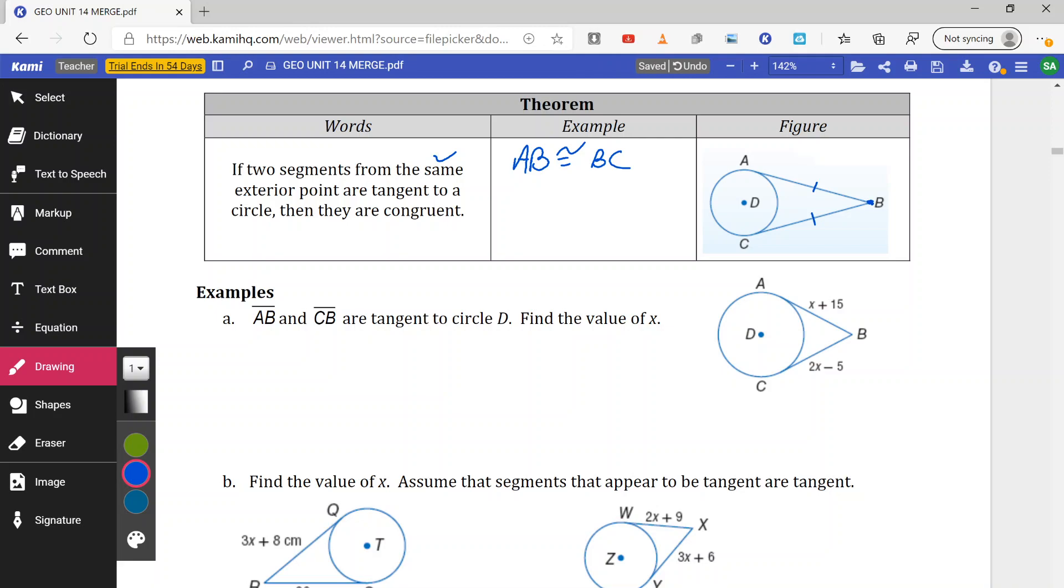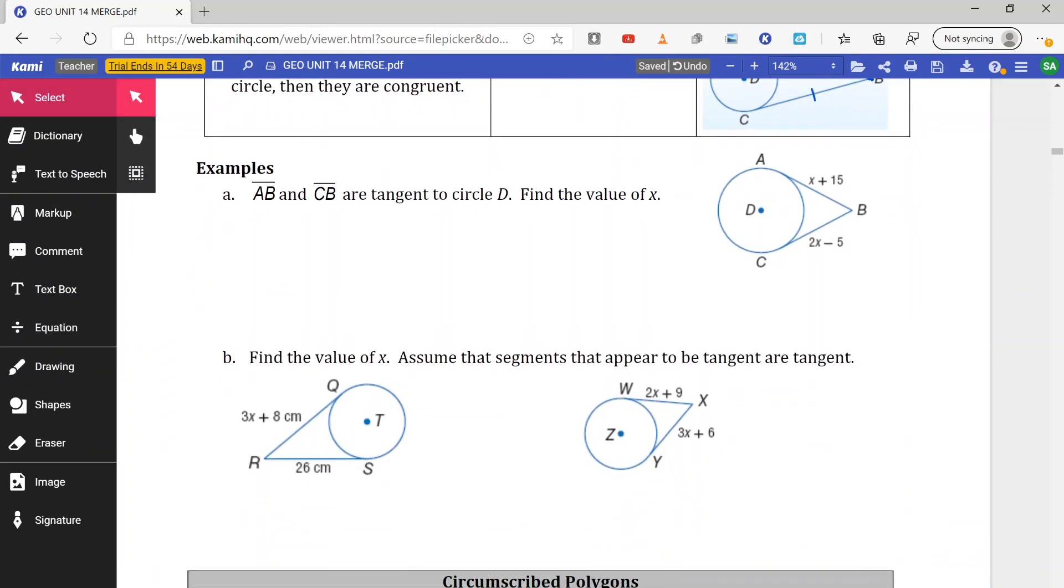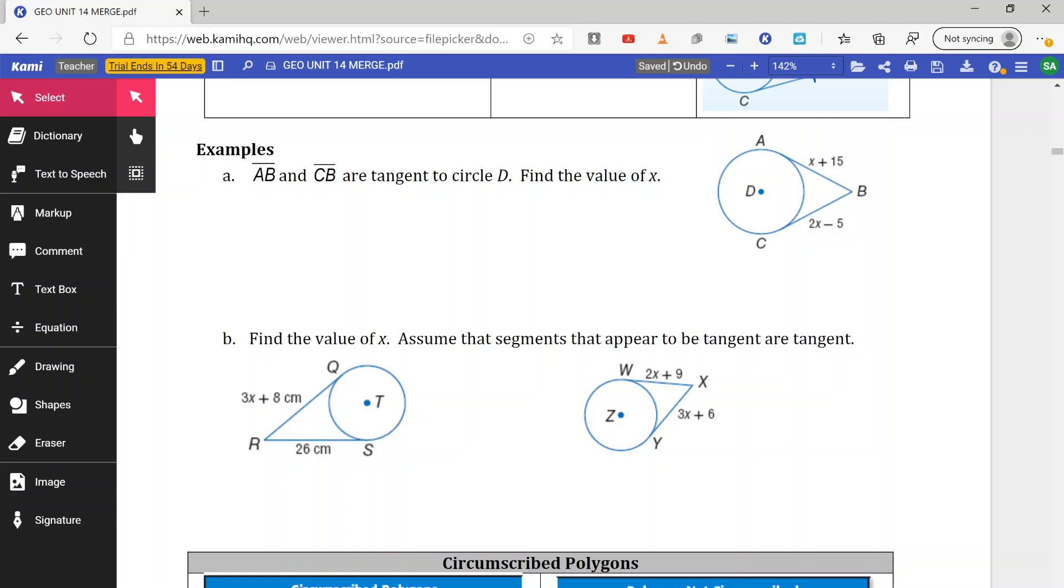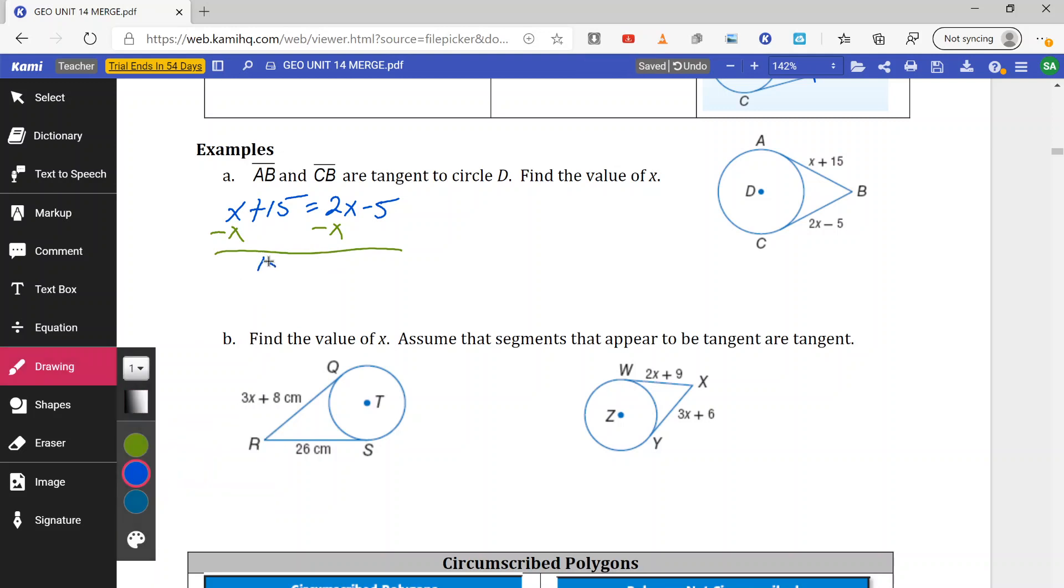So let's say in our first example here, we have AB and CB being tangent to circle D. Find the value of X. So we know they are tangent. They have the same exterior point. They meet at point B. Therefore, I can say the two are equal to each other. So X plus 15 is equal to 2X minus 5. Bring the smaller X over by subtracting. So we get 15 equals X minus 5. Add 5 to both sides. So we get 20 equals X. Pretty straightforward.